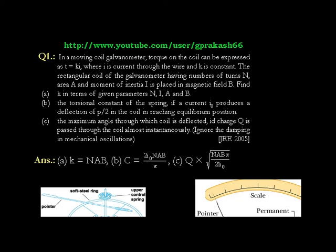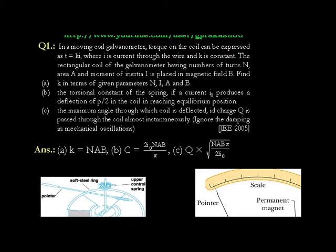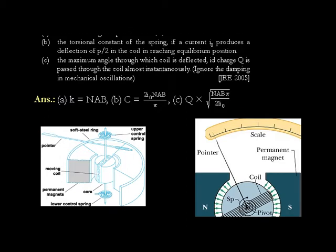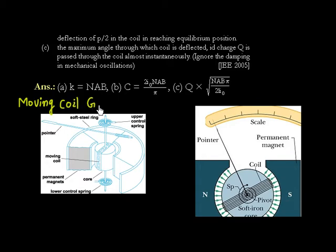Let us discuss this problem. This is related to the moving coil galvanometer. A moving coil galvanometer is a device that can measure the amount of current. Let us discuss first how this galvanometer works — we are discussing the principle of moving coil galvanometer.